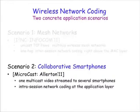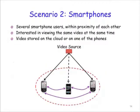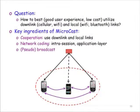Next, I'm going to describe a different scenario in the context of smartphones. Consider several smartphone users within proximity of each other who are all interested in viewing the same video at the same time. This video can be stored on the cloud or on one of the phones. This situation can arise when a group of friends or colleagues are in a remote location and not all of them have good or cheap cellular connection, or when they want to view video content stored on one of the phones. The key question is how to best utilize the resources available to all these smartphones to provide good user experience at low cost.